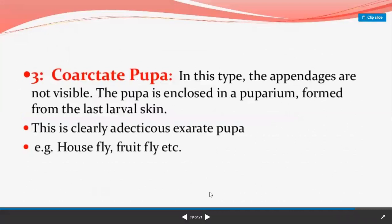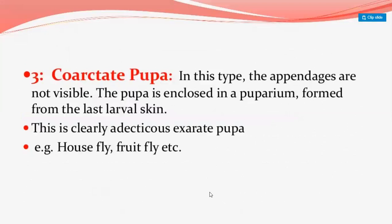The third type is coarctate pupa. In this type, the appendages are not visible. In decticous pupa, mandibles are present; in adecticous pupa, mandibles are absent; and in coarctate pupa, the appendages are not visible. The pupa is enclosed in a puparium, formed from the last larval skin. The puparium is the home-like structure of the pupa. This is clearly an adecticous exarate pupa, and examples of this type are house fly and fruit fly.